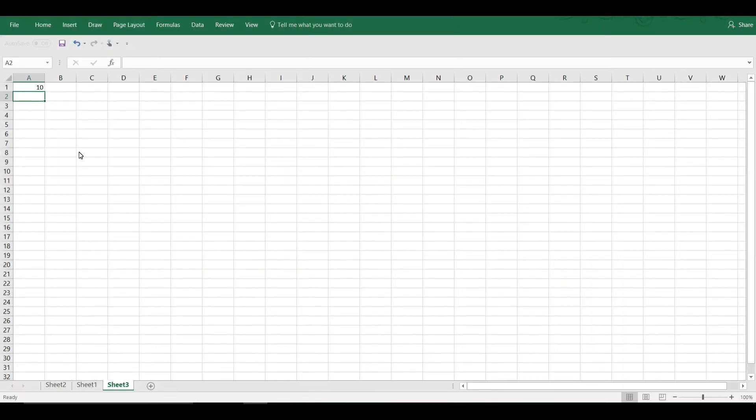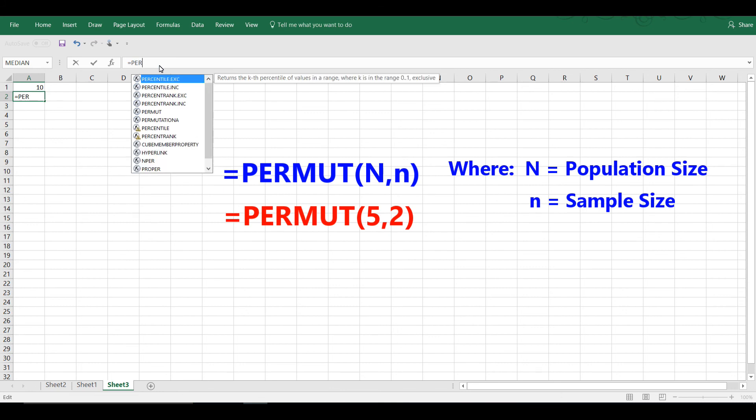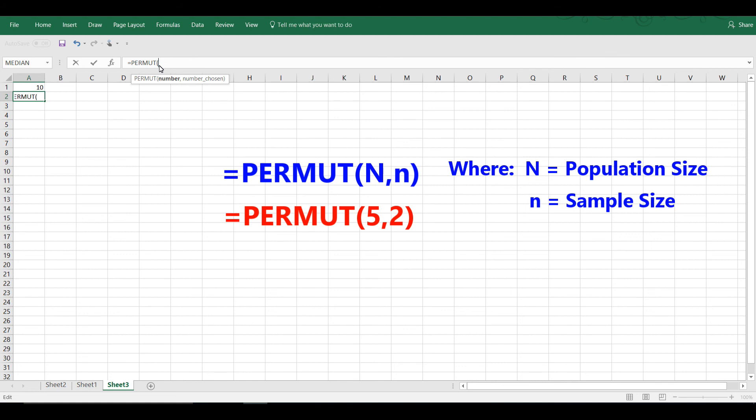The formula in Excel is the same as for the combination formula, but instead of using COMBIN, we use PERMUT, P-E-R-M-U-T, as follows. So we type in equal PERMUT, open parenthesis, and then you can see it's again number, two is little n, and then we close the parenthesis, and when I hit return, you can see the answer is 20.